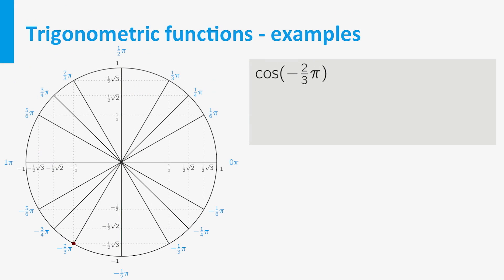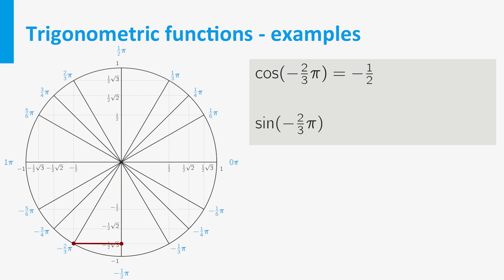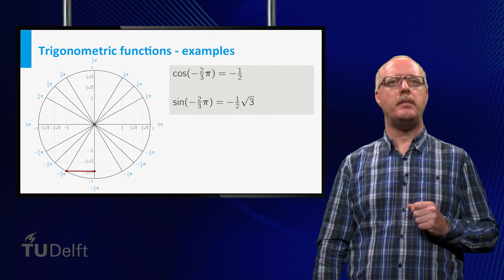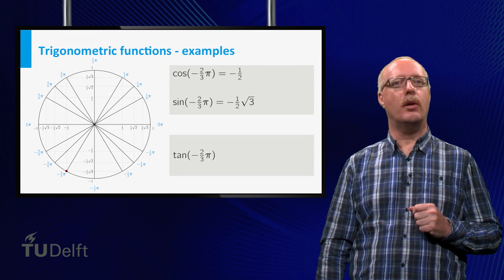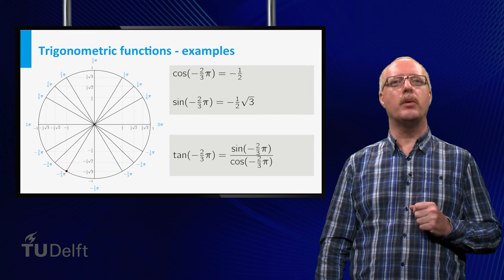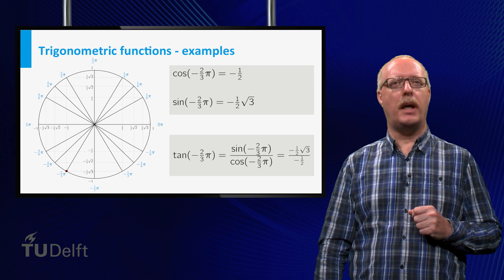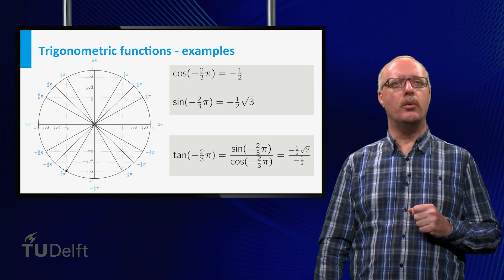Another example: if we want to find the value of the cosine of minus 2π/3, we make a turn with an angle of 2π/3 in the negative direction, which is clockwise, until we reach minus 2π/3 on the unit circle. Now we look at the horizontal axis and obtain the value minus one half. For the sine of minus 2π/3, we look at the vertical axis and obtain the value minus one half times the square root of 3. The tangent is the quotient of the sine and the cosine, which equals minus one half times the square root of 3 divided by minus one half, simplifying to the square root of 3.